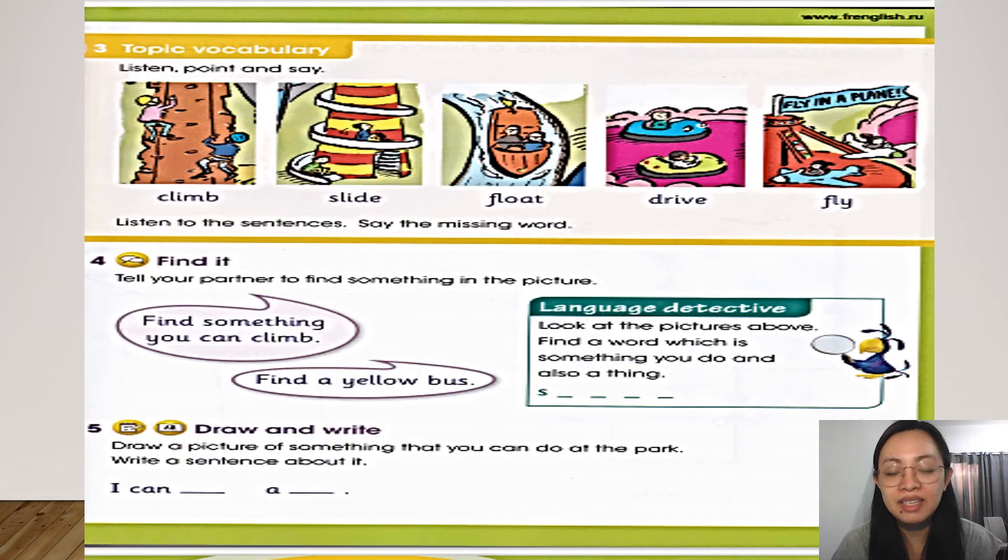This time I want you to open your English learners book. We have our topic vocabulary. So listen, point, and say. I want you to look at the pictures and we will read the words. Climb. Slide. Float. Drive. Fly.